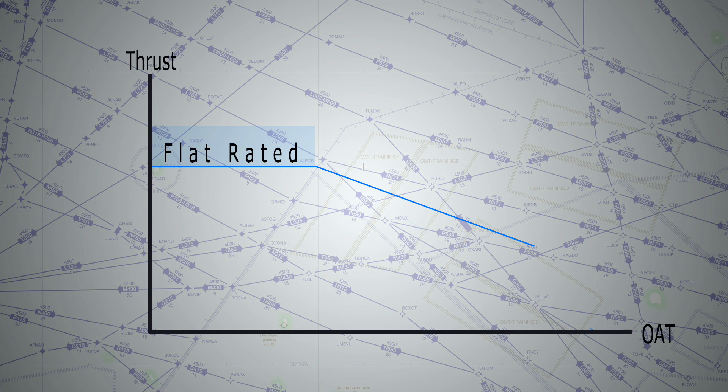So a flat rated engine is one that is capable of producing the same amount of thrust below a certain temperature but with less effort, hence less fuel flow. If we look closely, we can see that the graph produces a value for temperature that we call T ref, reference temperature.